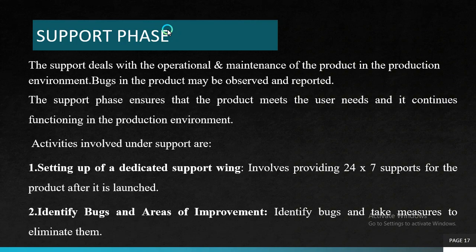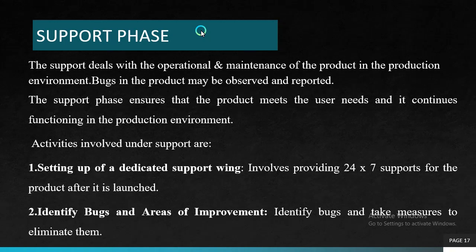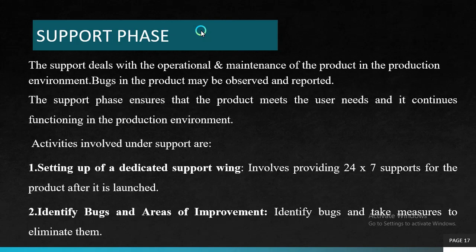The next phase is the support phase. Support deals with the operation and maintenance of the product in the production environment. Bugs in the product may be observed and reported. The support phase ensures that the product meets user needs and continues functioning in the production environment. The activities involved in the support phase are: setting up a dedicated support wing, and identifying bugs and areas of improvement. Setting up a dedicated support wing involves providing 24x7 hours of support for the product after it is launched. Identifying bugs means finding where bugs occur and taking possible measures to eliminate them.